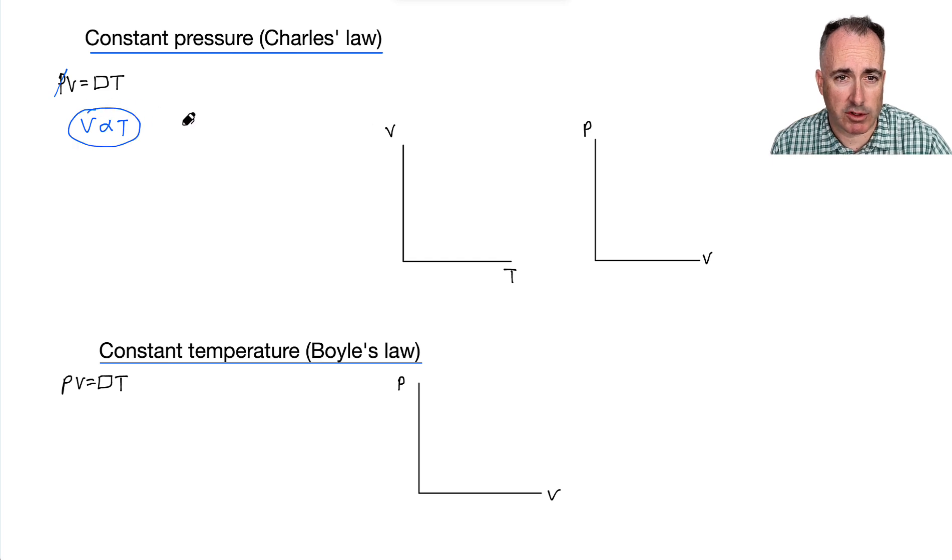So if we have V proportional to T, what does that mean? Well, that means that as T increases, so does V. So we're going to have some sort of linear graph like this. And if we have the pressure being constant, that means in this case here, this value of Y must be the same. So something like this. So it depends on which graphs you're looking at.